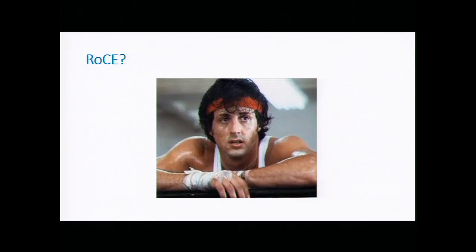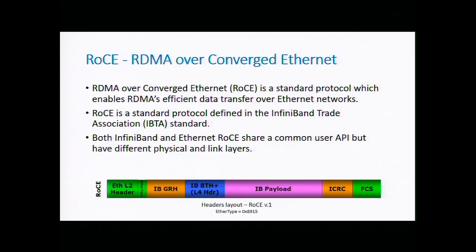So, RoCE. With the concern that achieving RDMA benefits requires changing your entire network architecture — which is not trivial — RoCE, or RDMA over Converged Ethernet, was introduced. It allows you to use RDMA benefits over an existing Ethernet fabric. RoCE is a standard protocol standardized by the IBTA, the InfiniBand Trade Association. Both InfiniBand and RoCE share the same common API, and both FreeBSD and Linux share these same APIs.